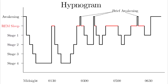Stage N2 (deeper sleep, bruxism occurs) shows sleep spindles and K complexes. Stage N3 is the deepest non-REM slow wave sleep, where sleepwalking, night terrors, and bed-wetting occur; EEG shows delta waves (lowest frequency, highest amplitude — opposite of beta).